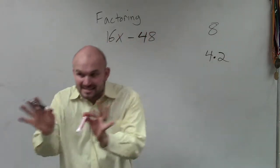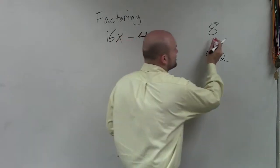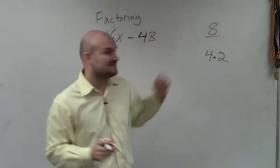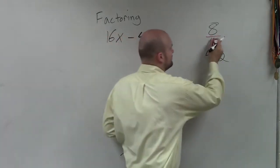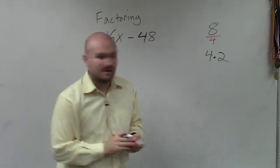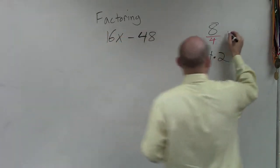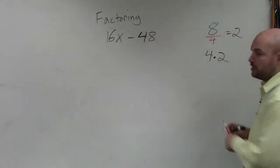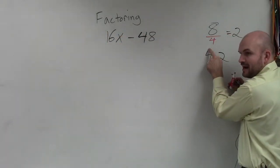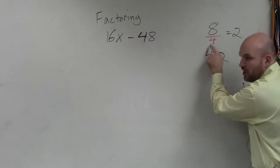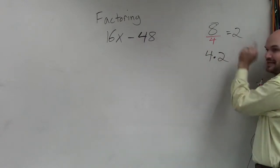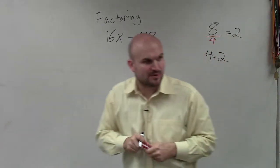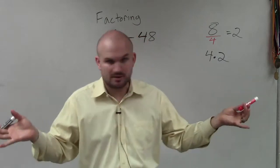You could rewrite it as 4 times 2. And basically, what you did was you determined a number that divides into 8, which was 4. And that answer of 8 divided by 4 was 2. So you took the number that you divided by and multiplied it by its quotient to give you back 8. Does that make sense?